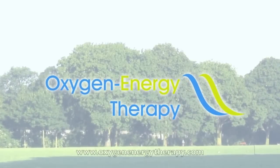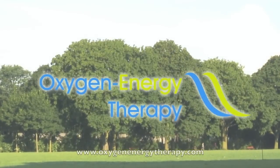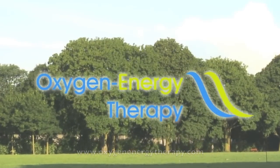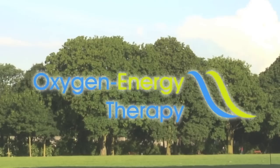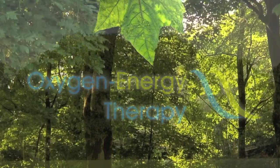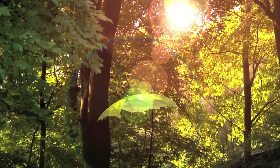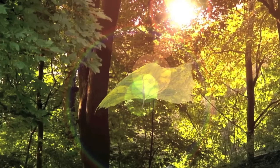In nature we often come across photosensitive substances or catalysts that enable chemical reactions to take place. Chlorophyll, which gives plants their green color, is one such catalyst. Sunlight activates the chlorophyll and enables photosynthesis to occur in plants.